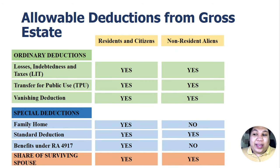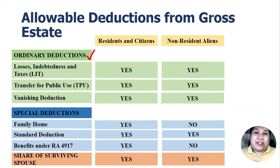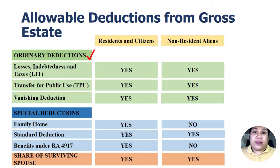We have already discussed the ordinary deductions — the losses, indebtedness, and taxes. We also discussed the transfer for public use and the vanishing deductions, and also a brief discussion about family home, standard deduction, and the benefits received under RA 4917. Those are the special deductions.